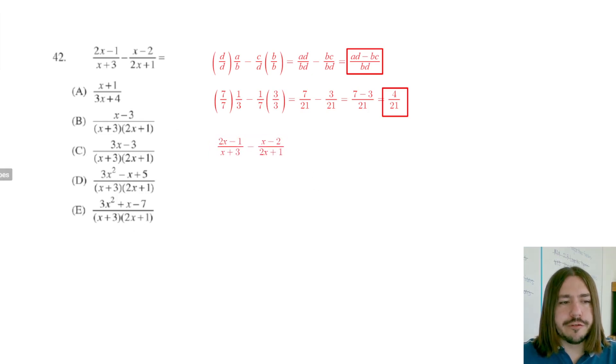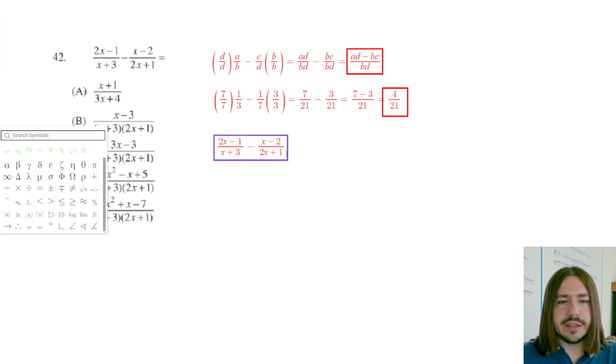So the first thing we want to do is we want to find a common denominator. And so how did we do that? Whether it was the general case or the specific case, we multiplied by the denominator of the other fraction. So in this case, I want to multiply this first fraction by 2x plus one over 2x plus one. Similarly, I'm going to multiply the second fraction by x plus three over x plus three.